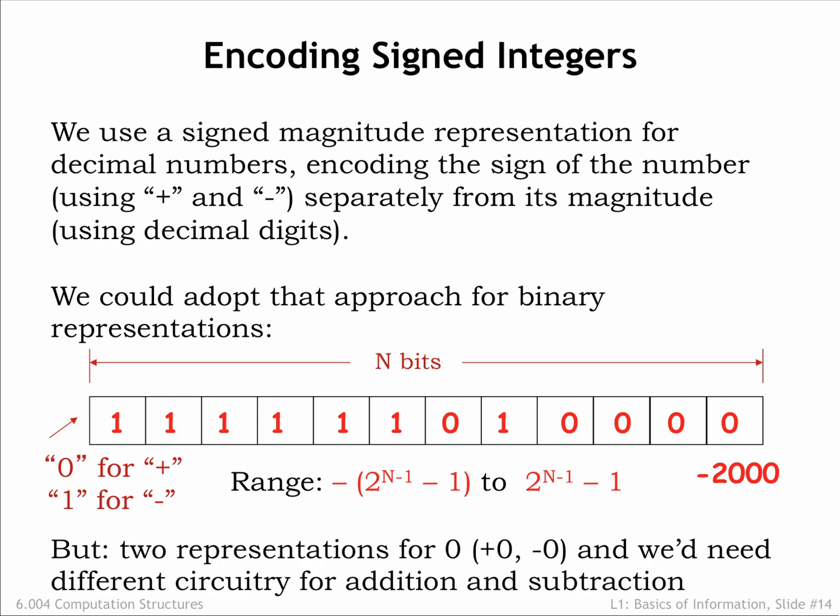However, there are some complications in using a signed magnitude representation. There are two possible binary representations for 0, positive 0 and negative 0. This makes the encoding slightly inefficient, but more importantly, the circuitry for doing addition of signed magnitude numbers is different than the circuitry for doing subtraction.